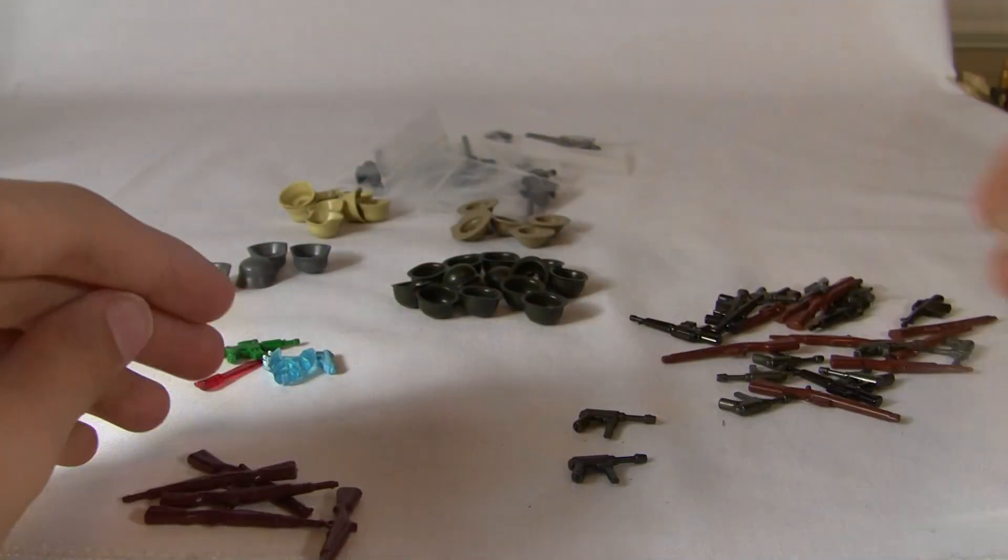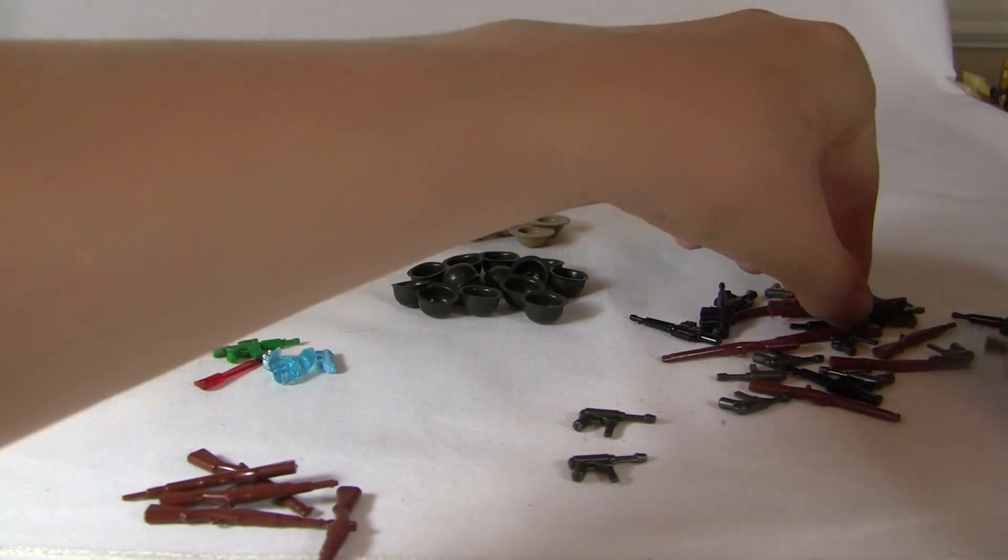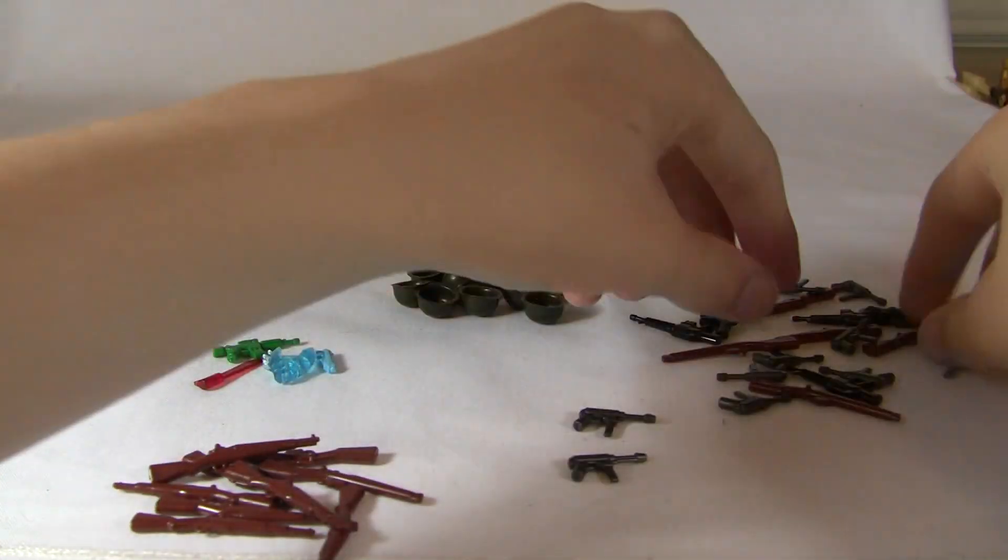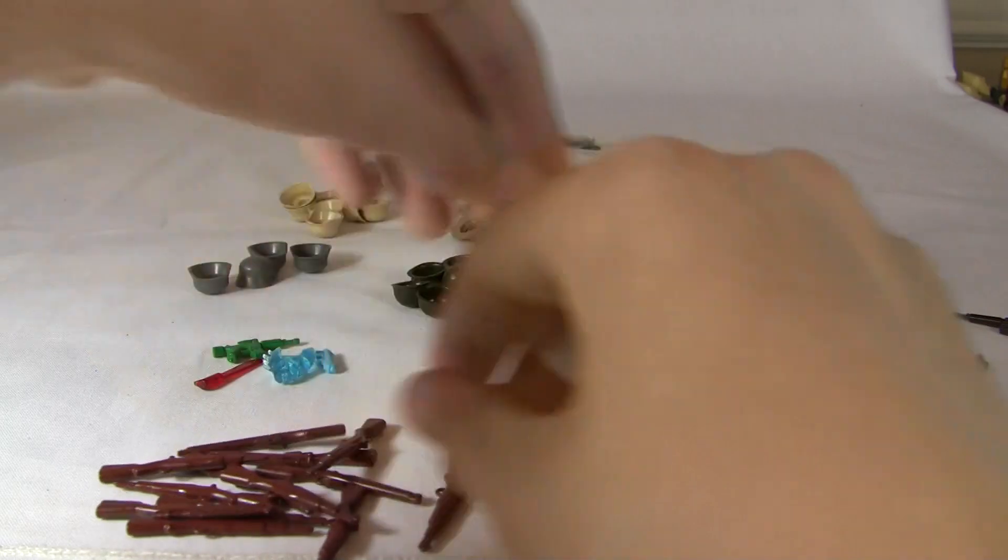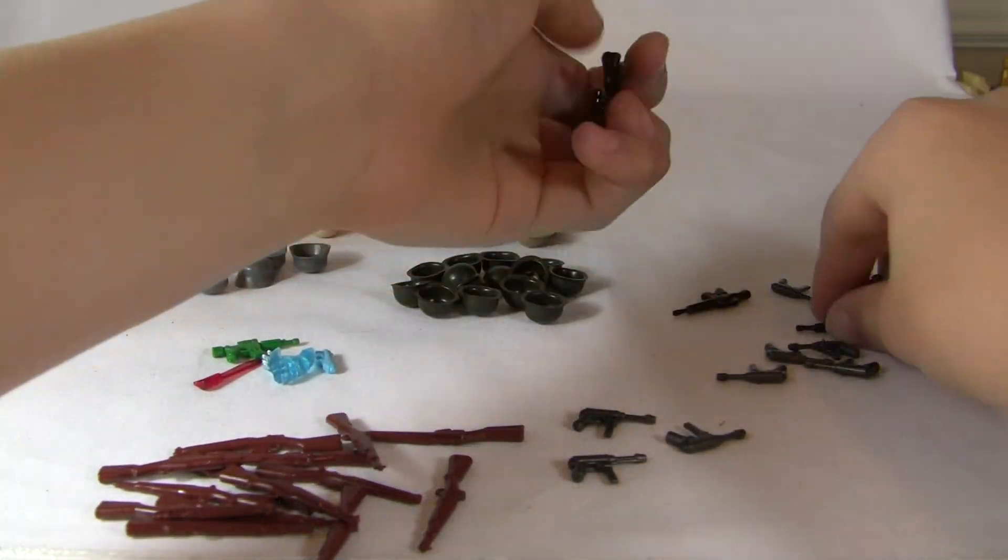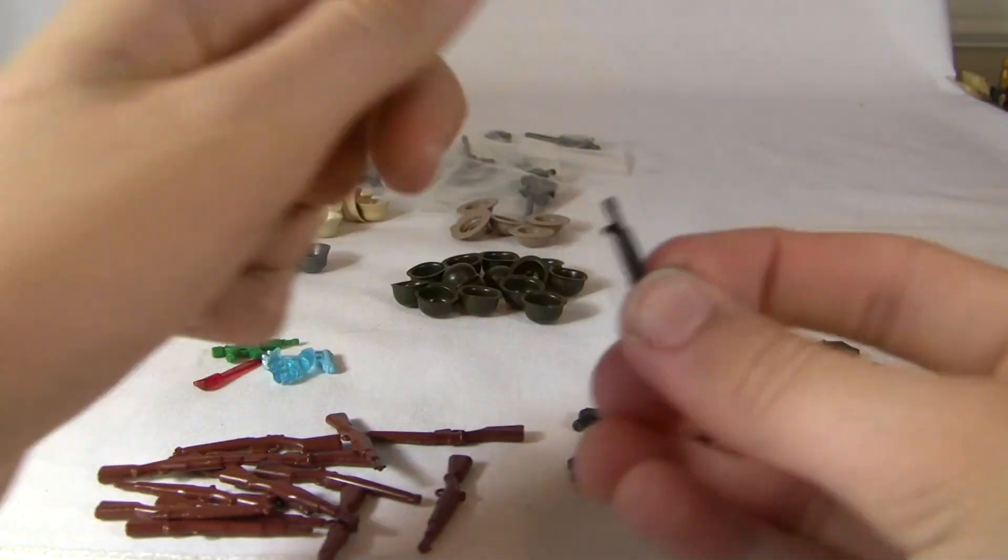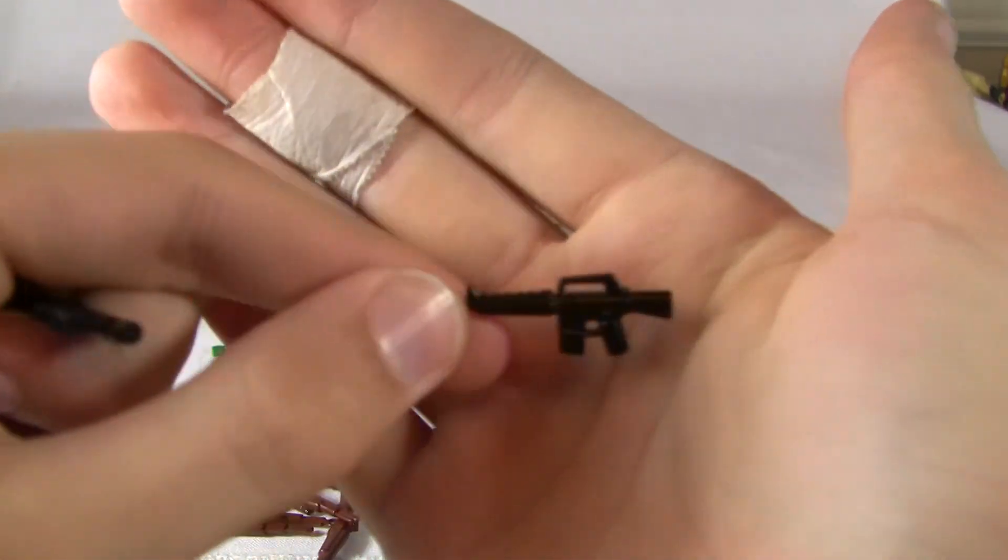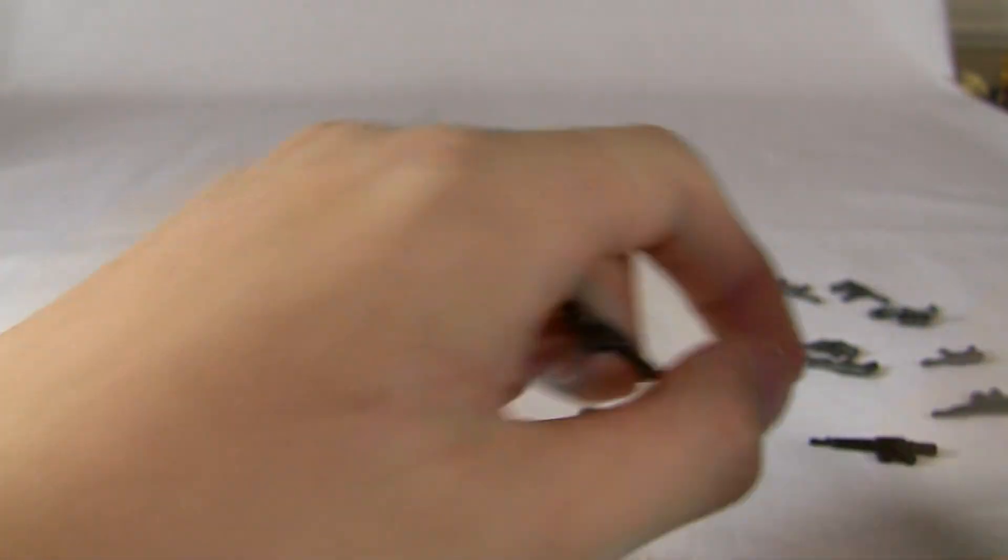Okay, so I believe we'll do these rifles. Do all the rifles. So first off, we have 6 M16s for Vietnam figures. So we got 6 of those in black.